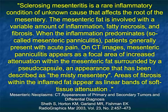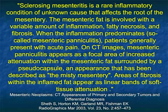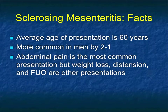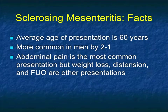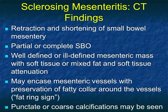Mesenteric paniculitis is a distinct entity where the patient may present with abdominal pain, haziness in the mesentery, and no significant mass effect — it looks like a misty mesentery. Sclerosing mesenteritis is more of a solid mass, and up to 70% of the time there will be calcification. It's more common in men, average age about 60. Abdominal pain is the most common presentation, along with weight loss, distension, FUO, or other presentations — making it clinically challenging, as one wonders whether the patient has a malignancy.